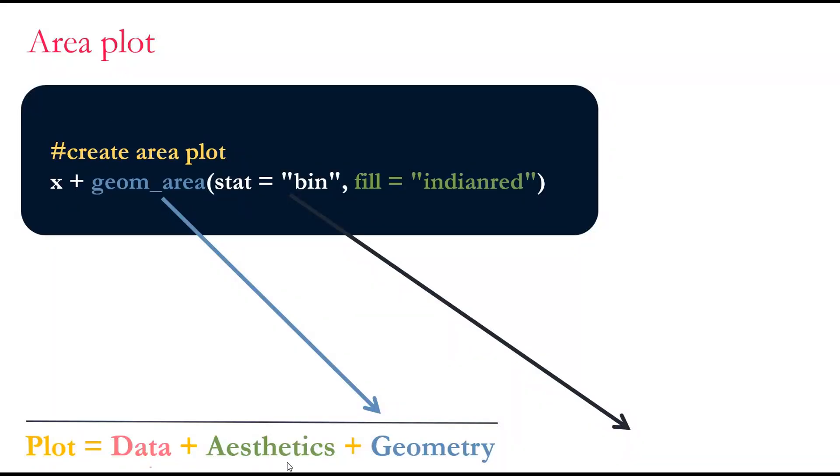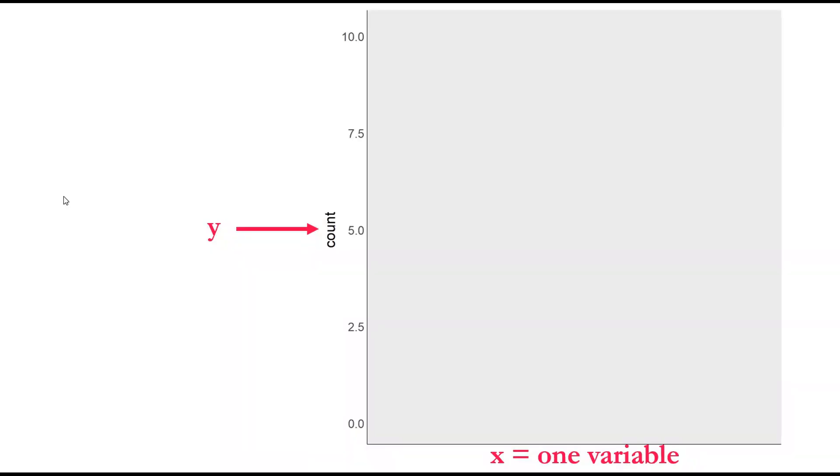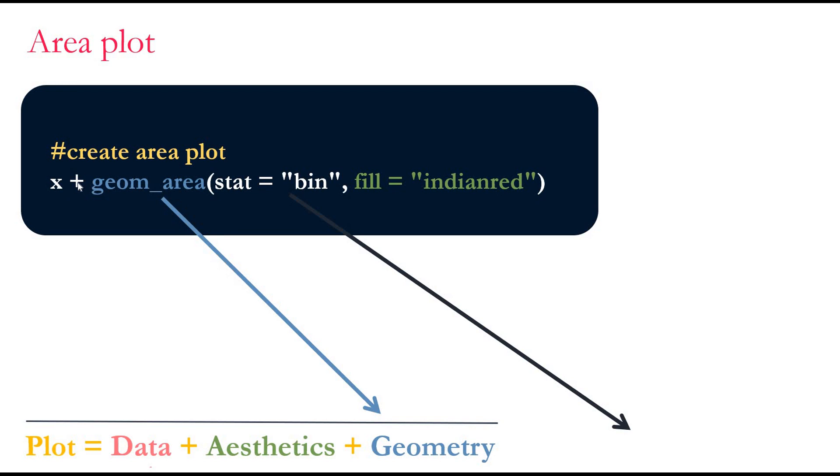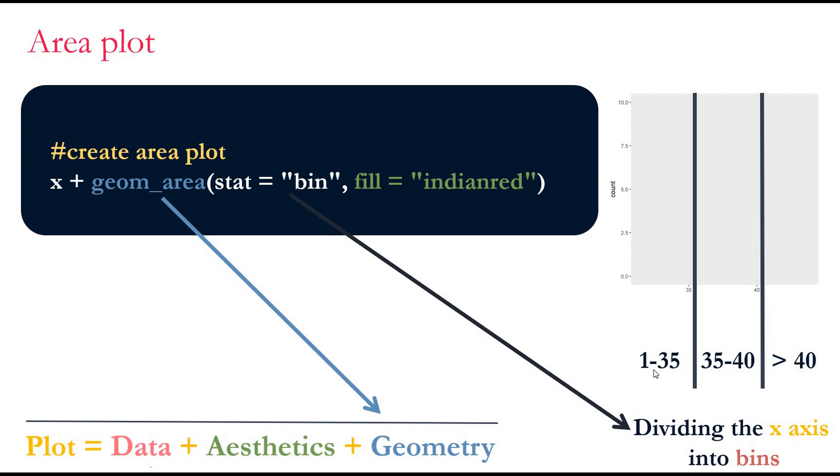So let's start with the area plot. We already specified the data and aesthetics and assigned it to X. If we go back, so now we are just going to use X and we will add the geometry area plot. We will use this argument stat equals bin. What does that mean? Since we have a graph here - since we don't have a restricted variable, we can't count each one as one, so we need to separate our graph into bins, dividing the x-axis into bins from 1 to 35, from 35 to 40, and more than 40. And also this here belongs to aesthetics. So here we are telling R to fill the area with the Indian red color. So let's go to RStudio and see how we do all these.